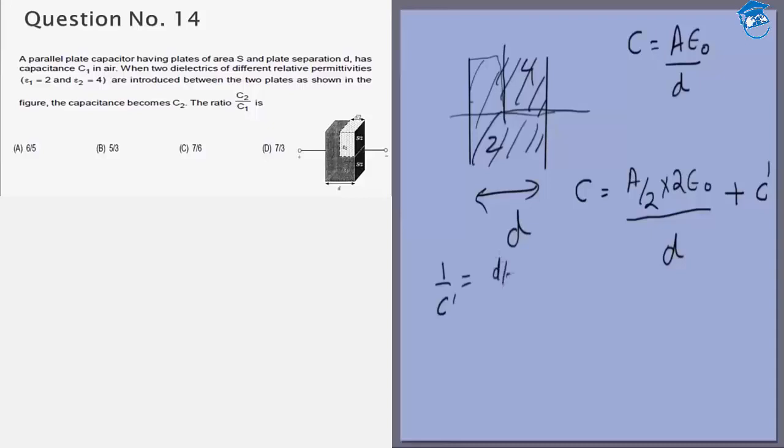So first of them it will be D by 2 by A by 2 into 2 epsilon 0 plus D by 2 by A by 2 into 4 epsilon 0. So D by 2 A epsilon 0 and D by 4 A epsilon 0.